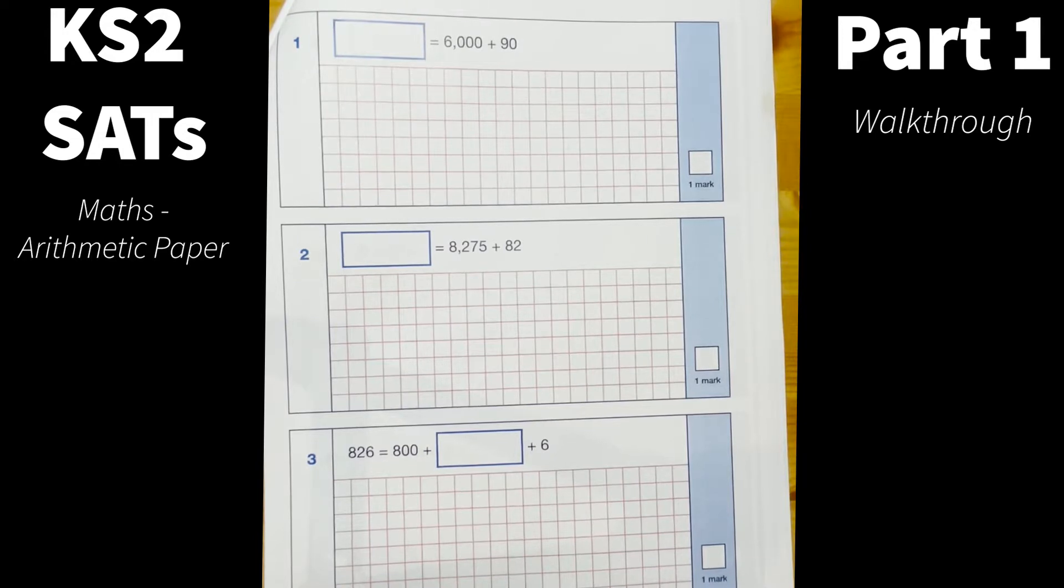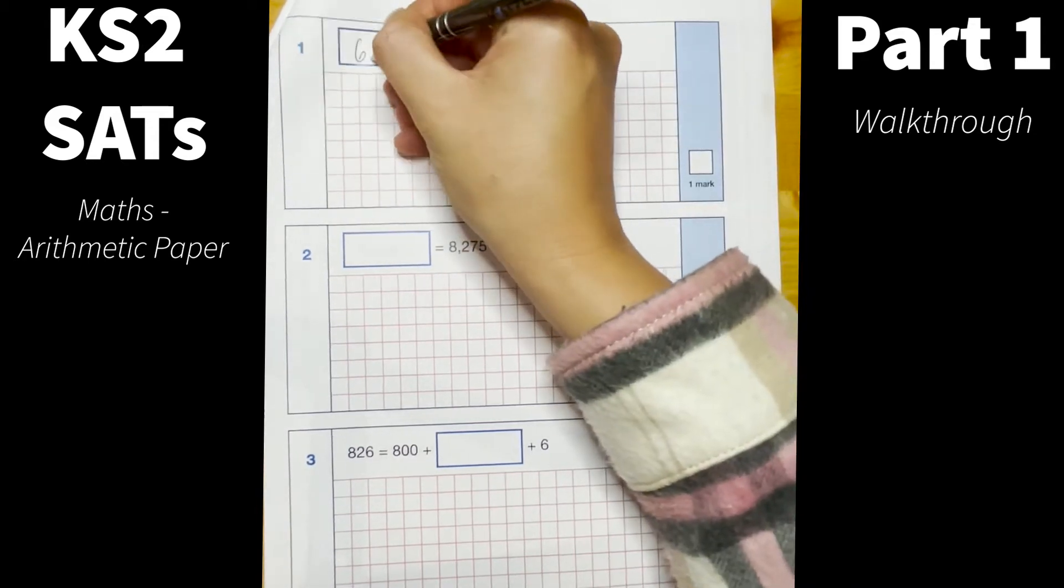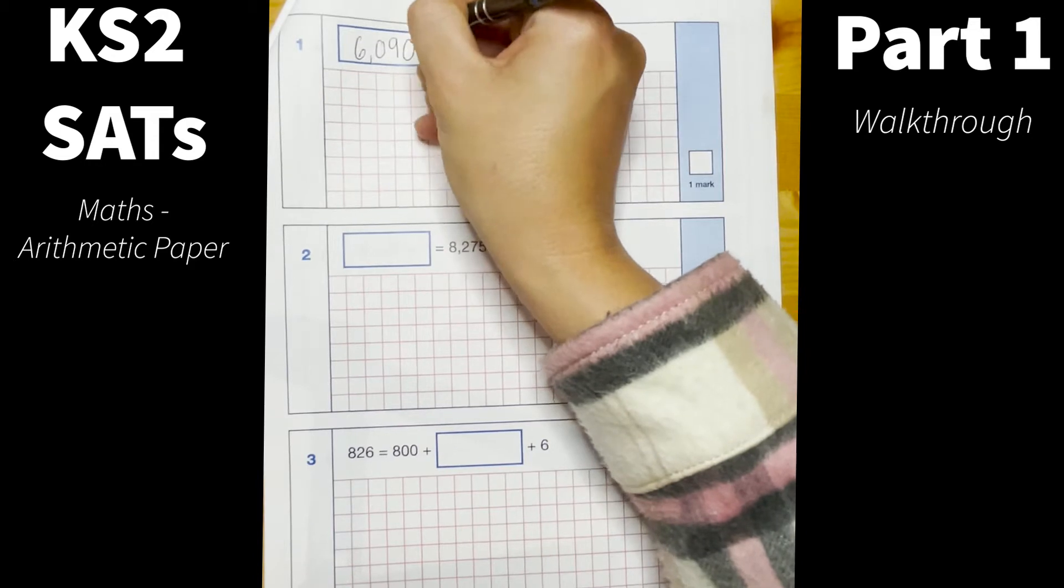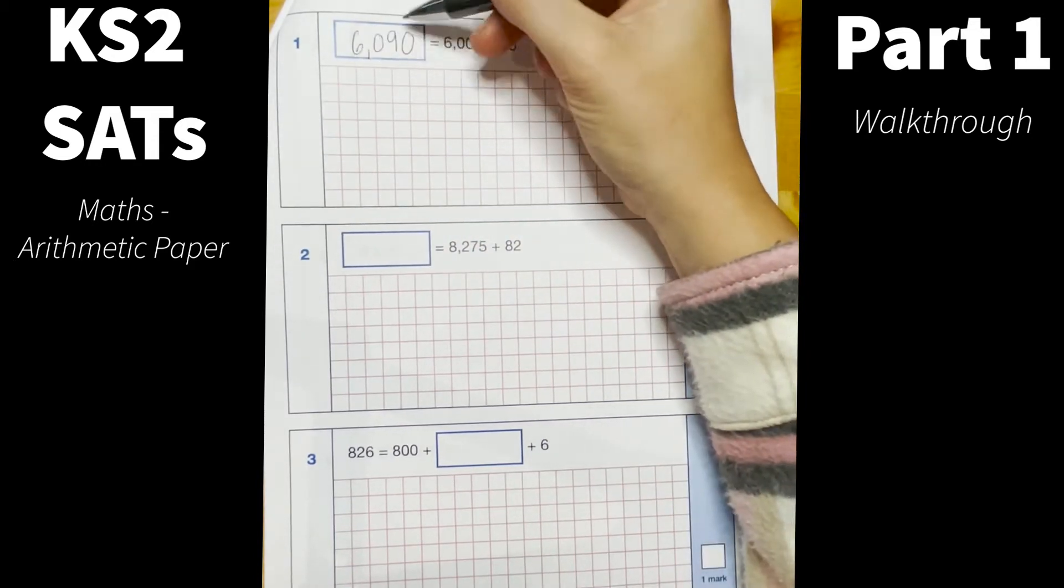So number one, 6000 add 90. This is going to call upon the children's understanding of place value and they should just be able to add 90 to 6000 which will give them 6090, and it's important that they put their answer in that answer box for them to get the mark.